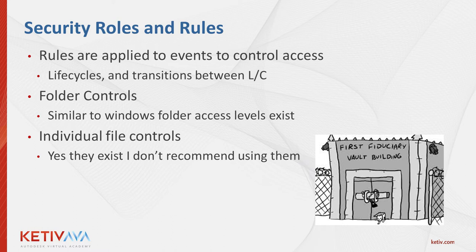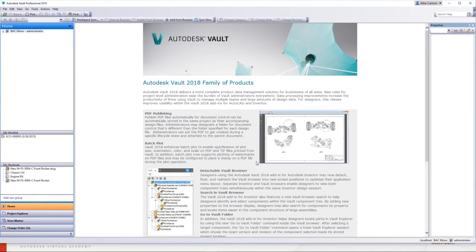That little comic in the corner there — that's what I was trying to describe. This entire building is locked up, but there's this little granular role that allows someone as a cat to go through the little cat door. That's just a description of what's going on. So let's jump over to Vault here. I am in Vault 2018, as you can see from the screen. The first thing I want to do is talk about just the roles, so I'm going to go into Administration — I'm logged in as an administrator here.